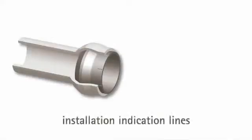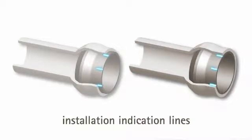The insert has molded indication lines for gauging proper installation into the tube. For correct installation, the tubing will cover all or at least a portion of the indication lines. The insert does not need to be fully pressed into the tube.